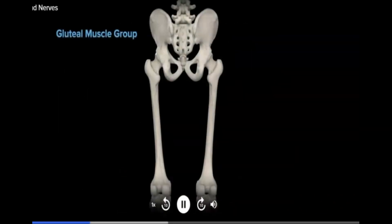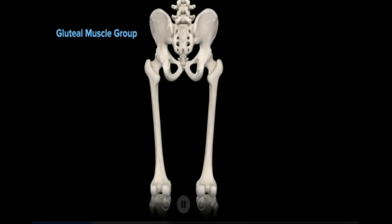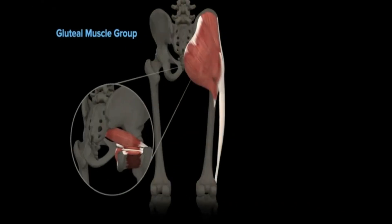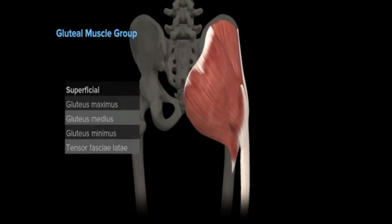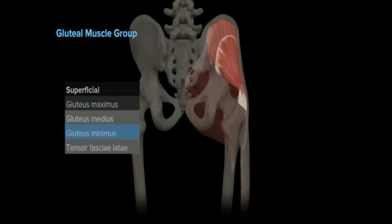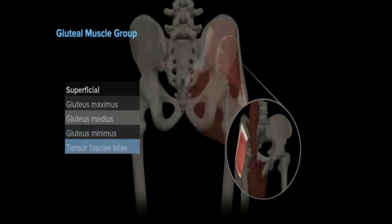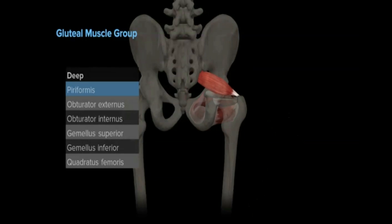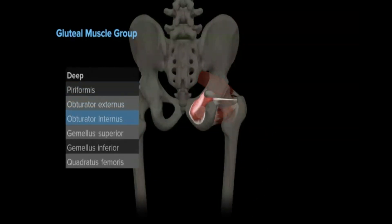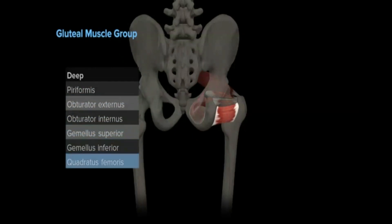The gluteal muscle group can be further divided into those that are superficial and those that are deep. The superficial muscles of the gluteal group are larger in size and made up of the gluteus maximus, gluteus medius, gluteus minimus, and tensor fasciae latae. The deep gluteal muscles include the piriformis, obturator externus, obturator internus, gemellus superior, gemellus inferior, and quadratus femoris.